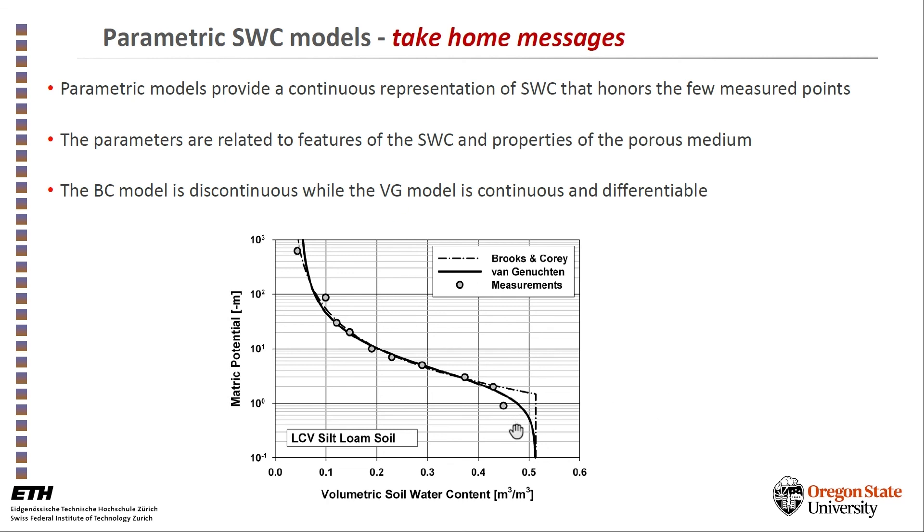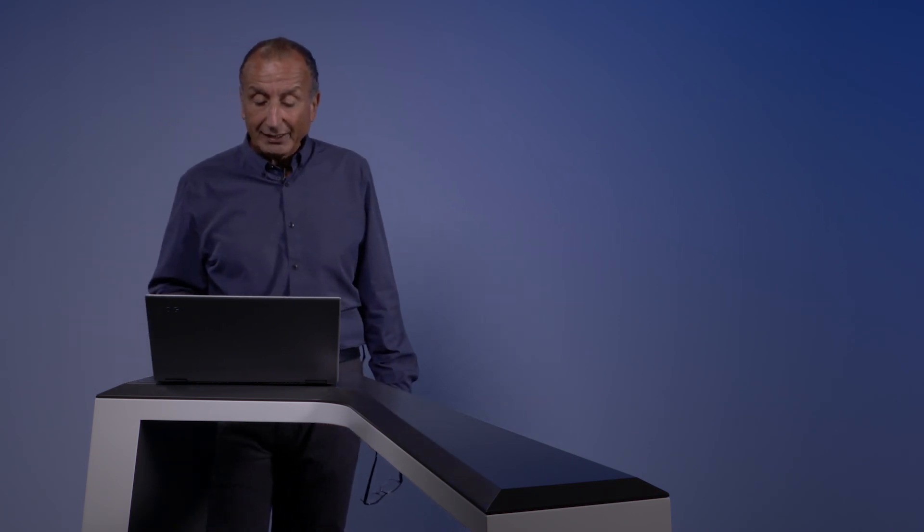The Brooks and Corey model shown here by the dashed line has this notorious discontinuity that numerical modelers hated, whereas the van Genuchten model that fits to the same data is a continuous function that is differentiable and therefore liked by modelers.